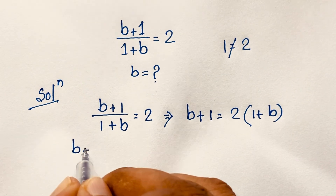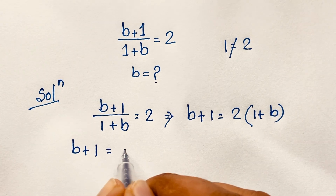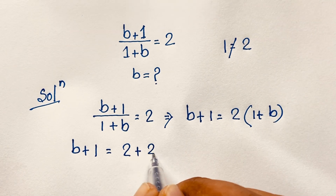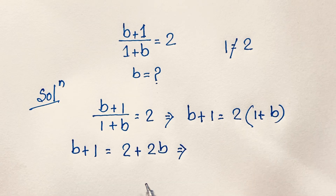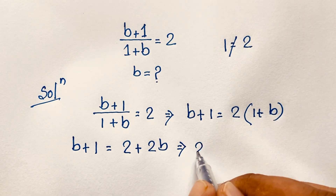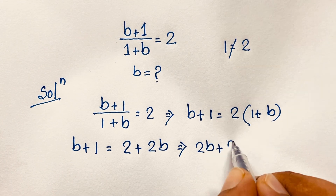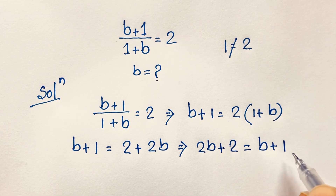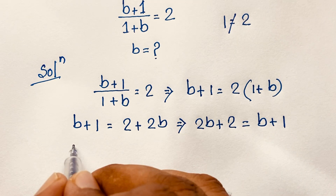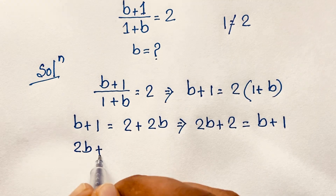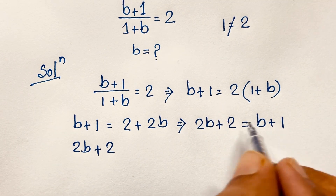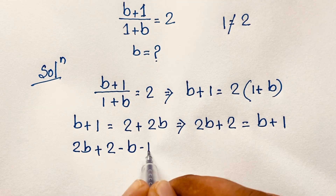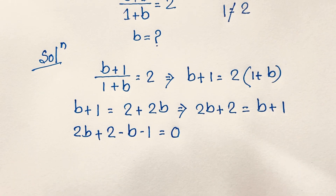So b + 1 = 2 × 1, which is 2, plus 2 × b, which is 2b. Rearranging, we get 2b + 2 = b + 1. If I move terms to one side, it becomes 2b + 2 − b − 1 = 0.